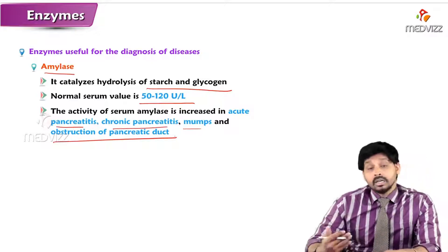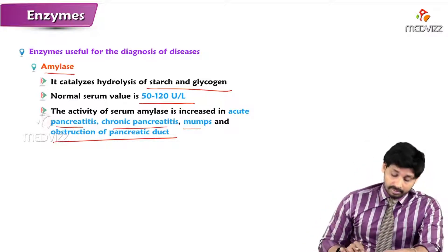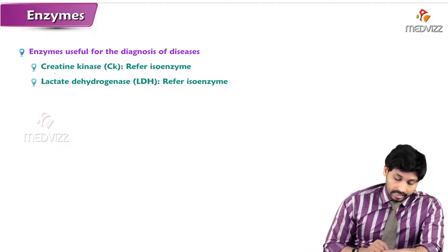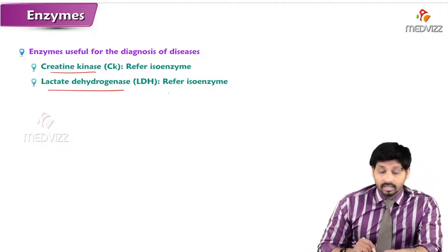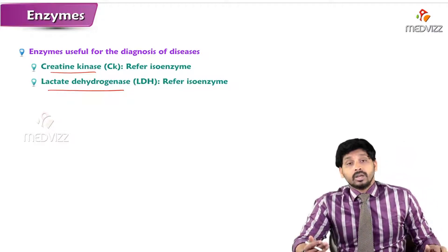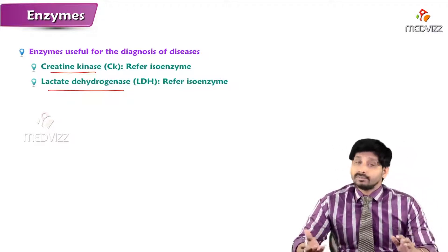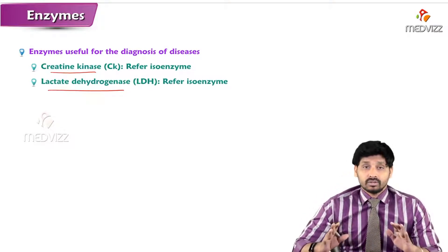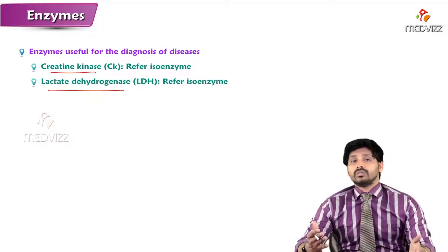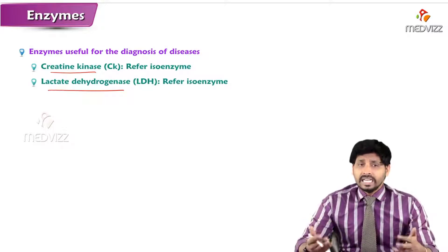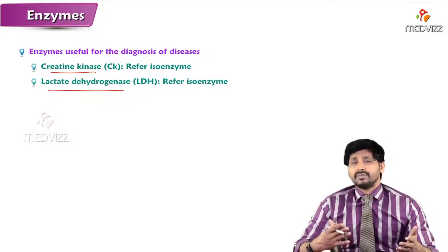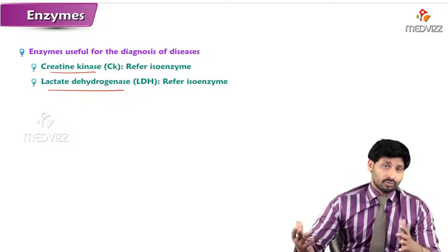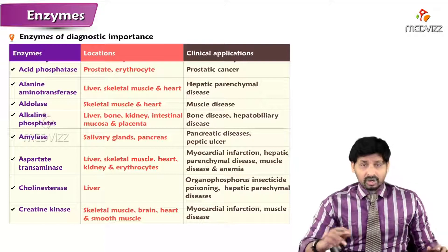Creatine kinase (CK) and lactate dehydrogenase (LDH) have already been discussed in the isoenzymes chapter; refer to the previous video for those enzymes. They are mainly useful for diagnosis of myocardial infarction as well as muscular disorders like myasthenia gravis and muscular dystrophies.